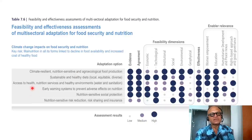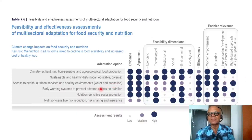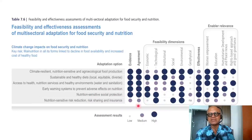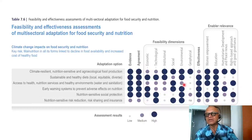Access to health and nutrition services and healthy environments — including water and sanitation — and early warning systems to prevent adverse effects on nutrition all show high evidence and high assessment agreement. However, dependence on feasibility dimensions and enablers is low, while the effectiveness here is high.